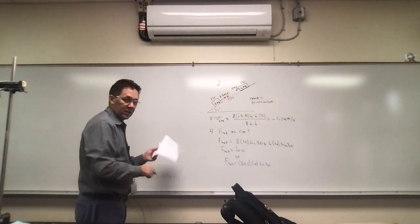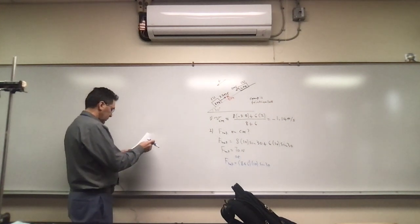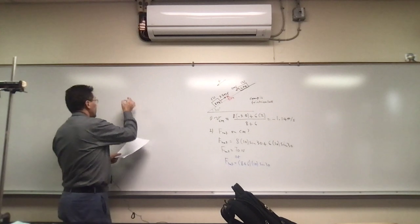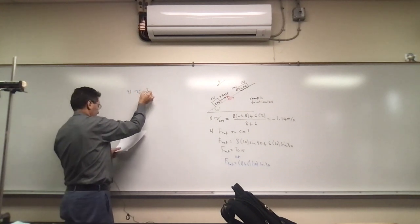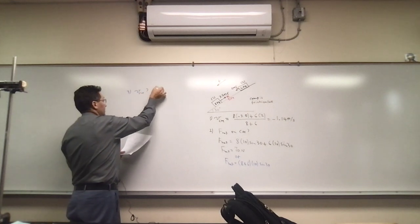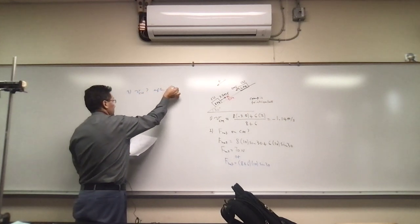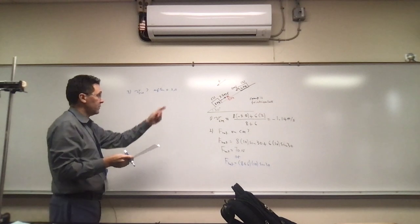The next question - let's say three - is find the velocity of the center of mass after 0.2 seconds from this moment here. Okay, so we can do that two ways. We can do F_net equals ma, and we can find the acceleration.